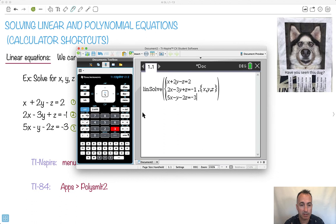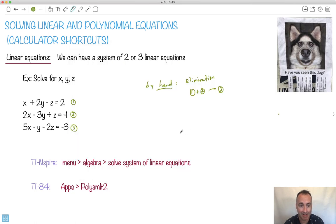And similarly, 5x. The hardest part basically is just putting it all into your calculator, which isn't really that hard. Equals minus 3. So basically I'm just going to do this, and boom! It tells me my x, y, and z values. So x is 1, y is 2, z is 3. That was it, just like that.